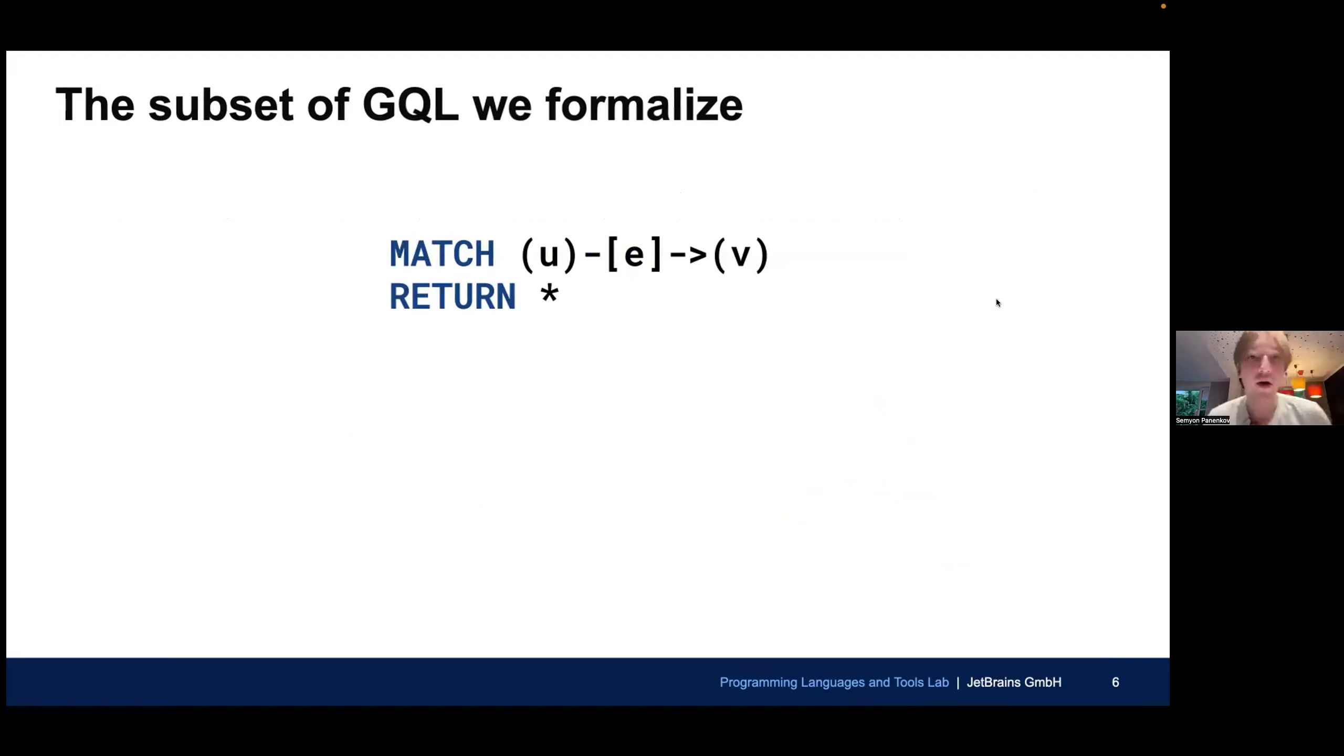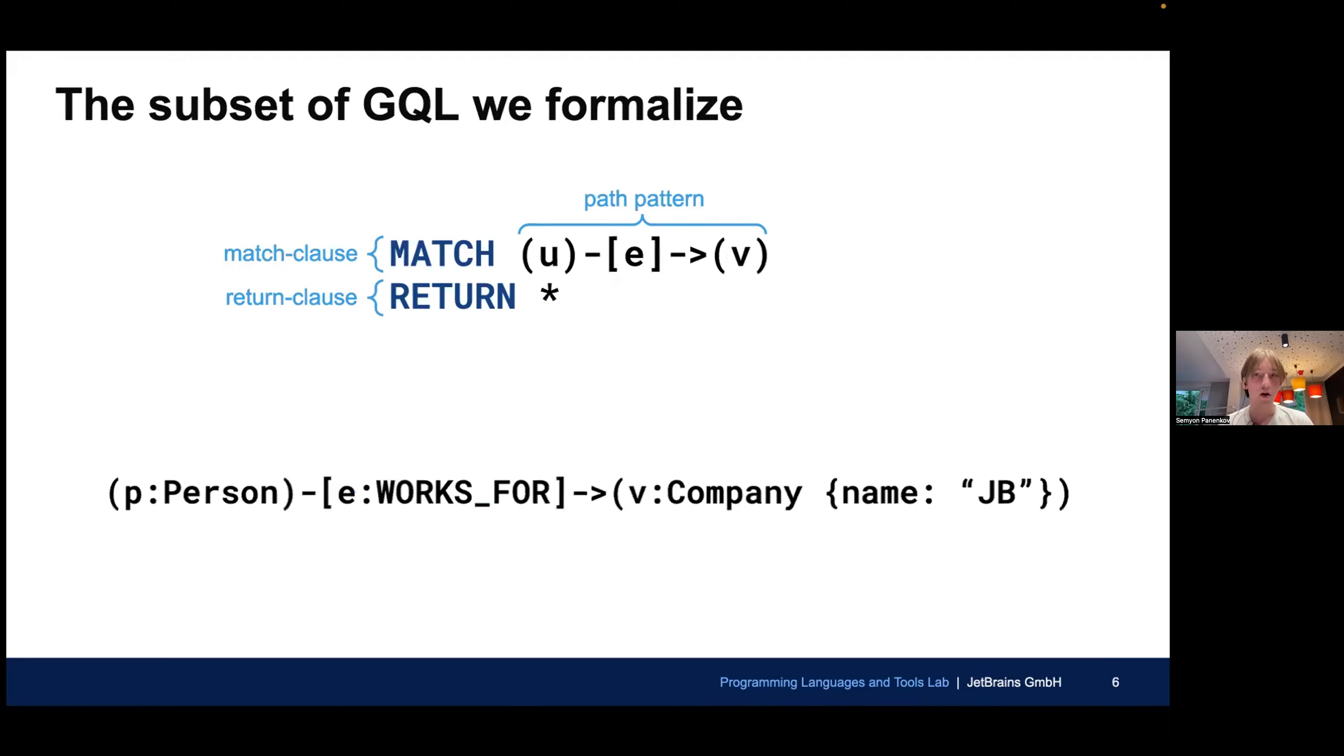Let's go over which subset we have chosen. We have formalized really simple three queries, which consist of a match clause, which specifies a path pattern and the return clause, the simplest form of return clause, which just returns everything. And our path patterns, they allow you to specify names, labels, and properties. You cannot specify more than one label, but all of these things are optional, as in GQL and Cypher.